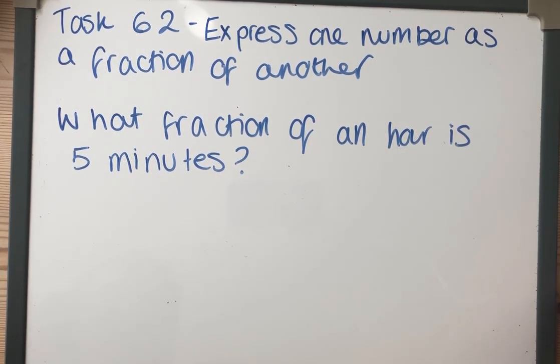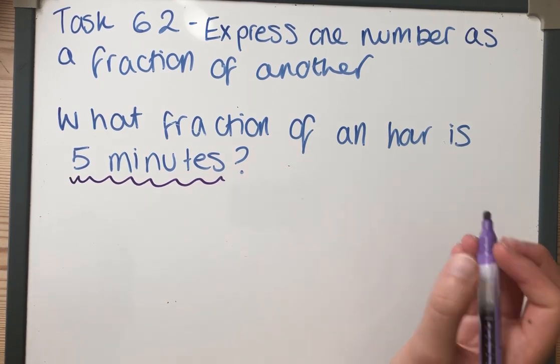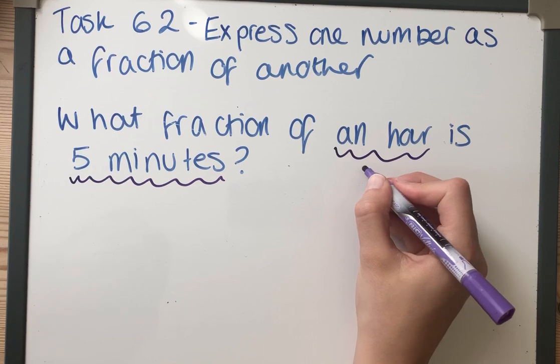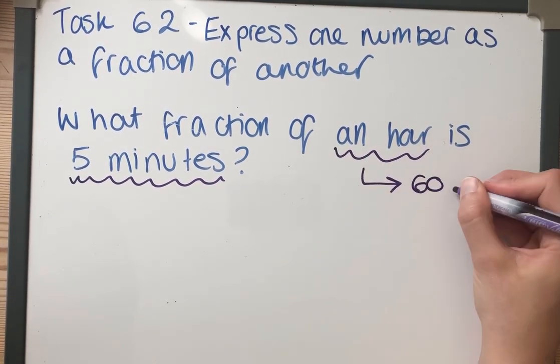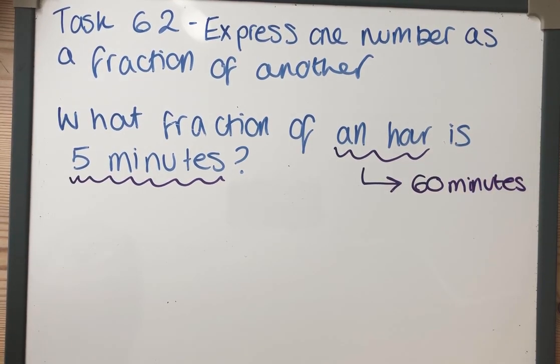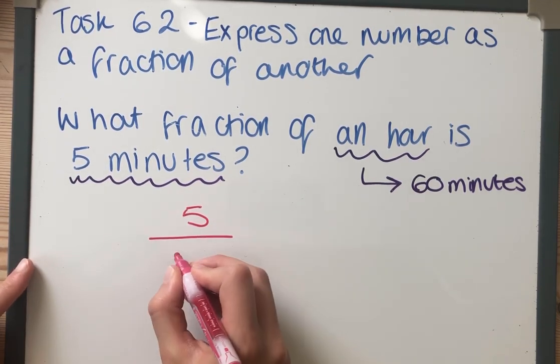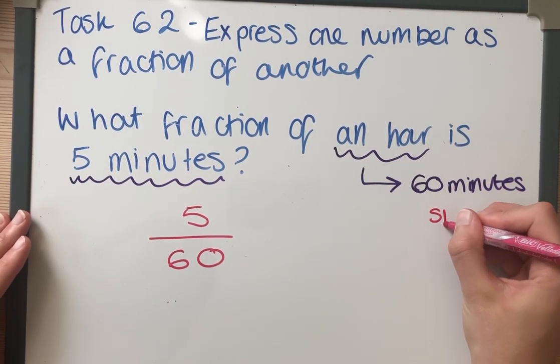And again, we've got to give our answer in its simplest form. So we're looking at what fraction of one hour is 5 minutes, and there's a big problem here—we've got different units. This is 5 minutes and this is an hour. Now we can make these be in the same units because an hour is 60 minutes. That means that 5 minutes as a fraction of an hour is 5 out of 60.